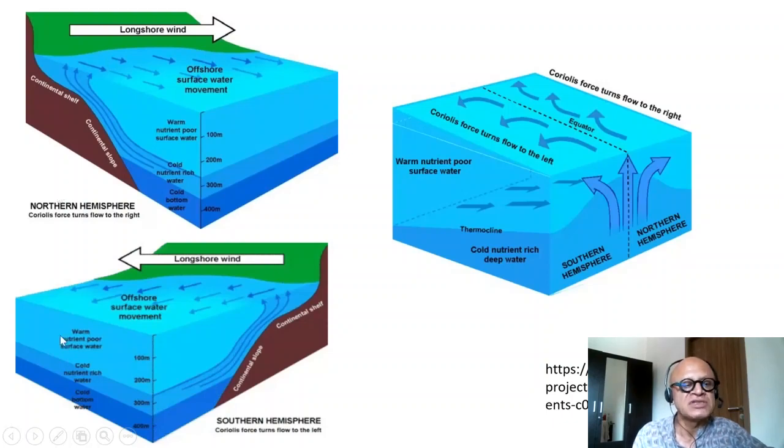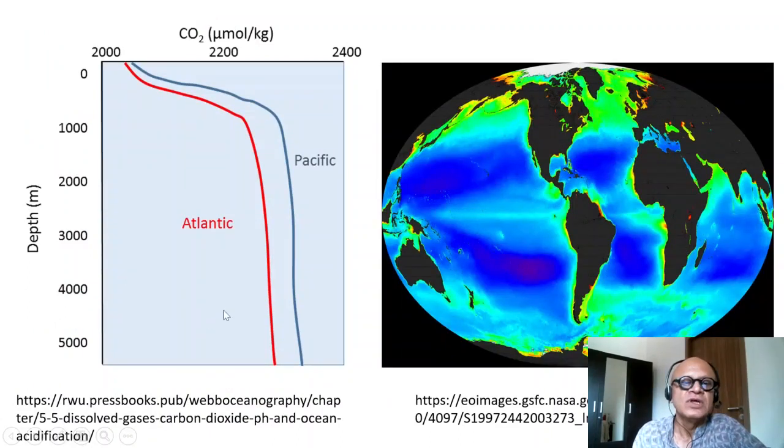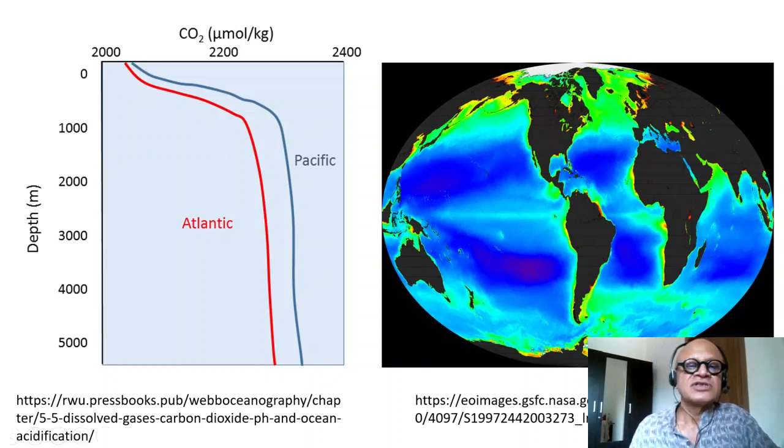Depending on which hemisphere you are in, alongshore winds and Coriolis together can create upwelling as you drive Ekman transport or the wind-driven transport away from the coast depending on the hemisphere. So we looked at this contrast of CO2 in the oceans on the equator. This is more for the subtropical gyres in higher latitudes where the deep water formation affects the distribution.